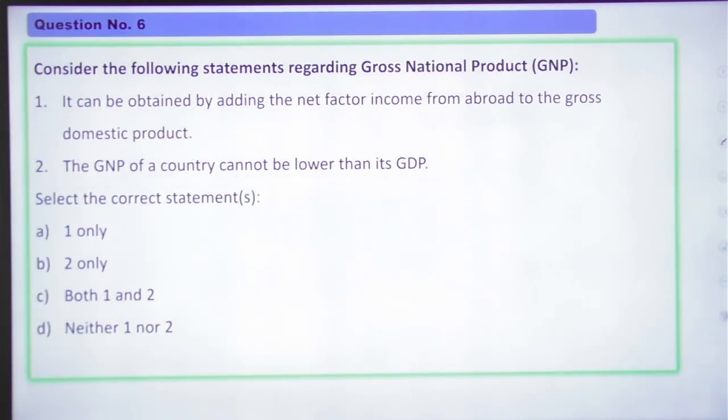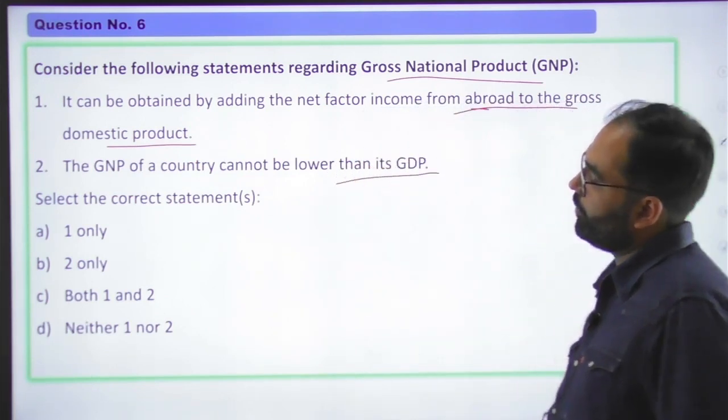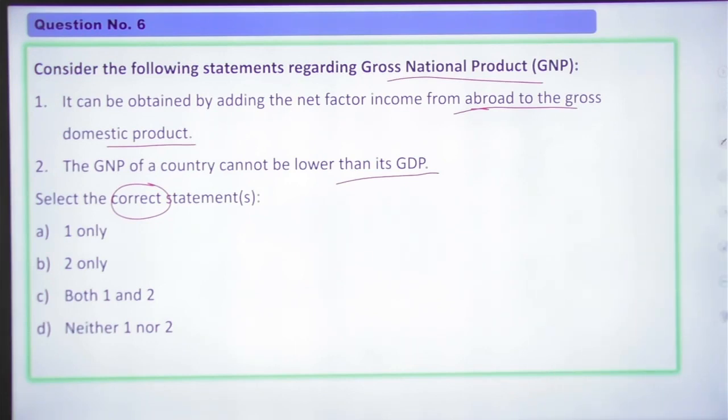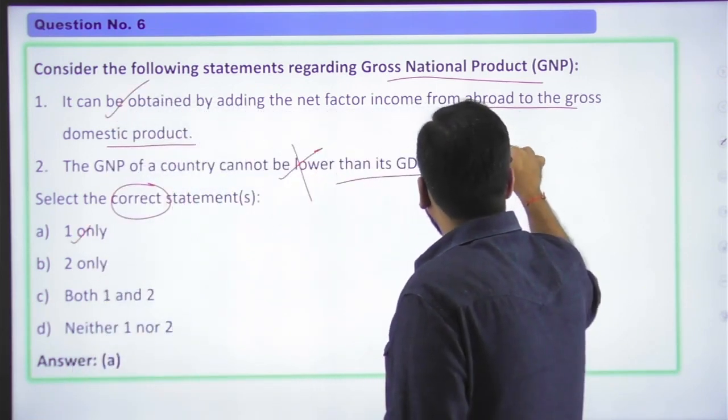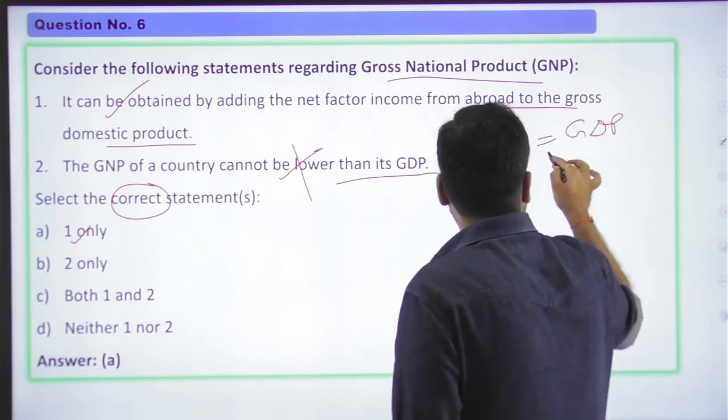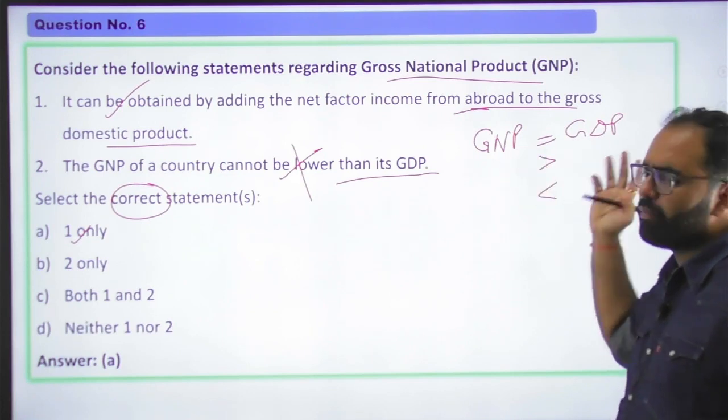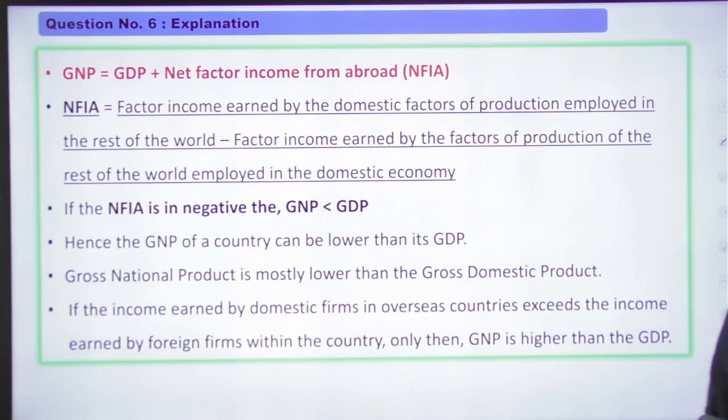Moving to question number 6. Consider the following statements regarding gross national product GNP. First, it can be obtained by adding the net factor income from abroad to the gross domestic product. And second, GNP of a country cannot be lower than its GDP. So you can tell which statement is correct here. The first statement is correct. The second statement is wrong. The first is a simple definition. The second statement is wrong. So answer is A, that is the first statement is correct.